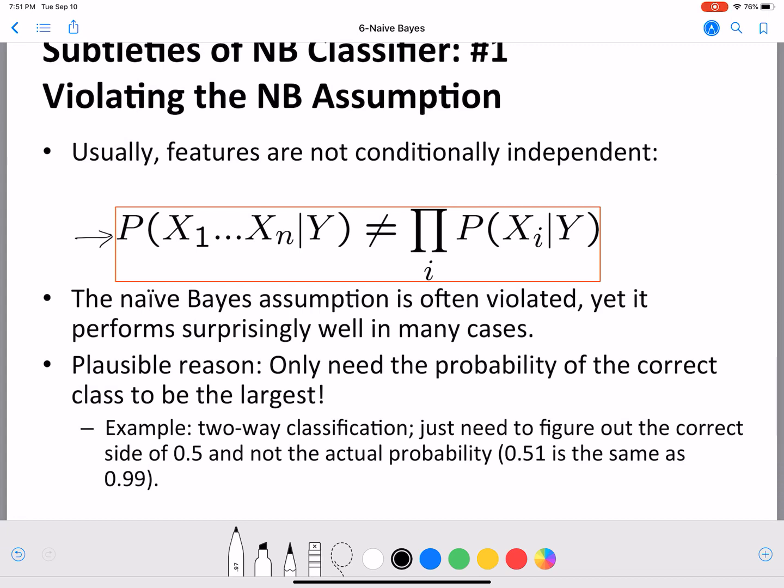It's a simplifying assumption when you think about it, that we want each and every feature to be conditionally independent given the class variable, and that is unlikely to happen in the real world. Features often are correlated and their values depend on each other. This can be violated more often than you think, but still, even with the assumption, Naive Bayes performs quite well.